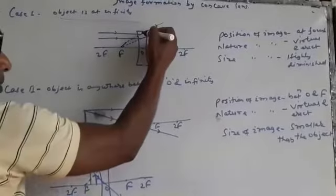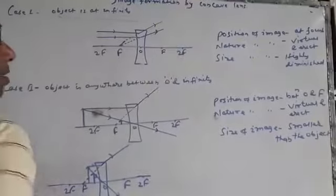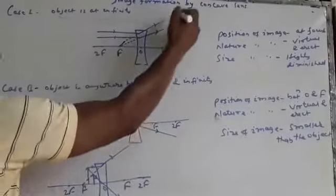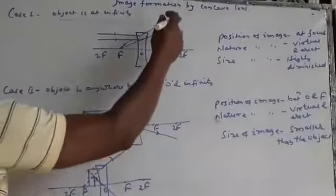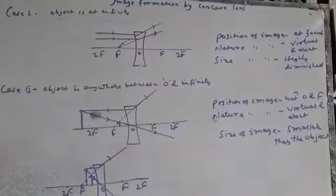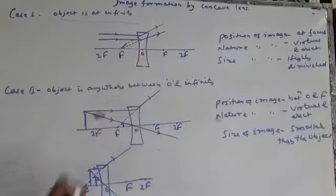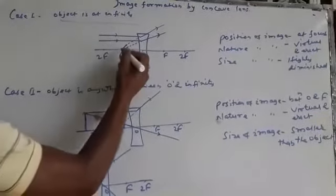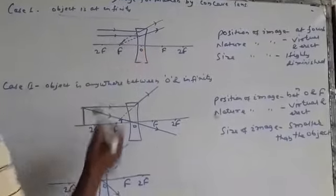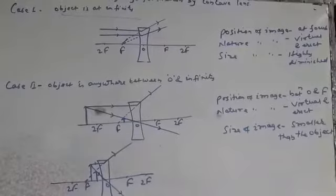After falling on the lens, all the rays diverge and no chance to meet anywhere. Because the distance between these two rays are increasing. Now we have to produce backward by dotted lines and it is found that both the refracted rays meet at F. So image of the object is formed at F.